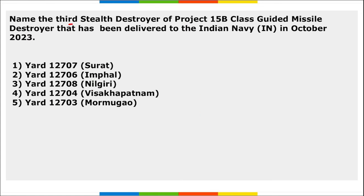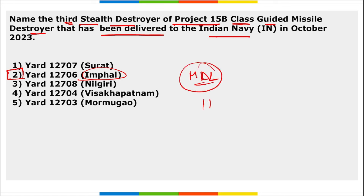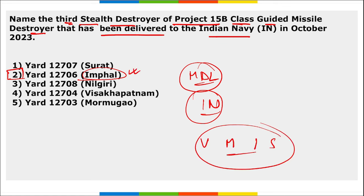Next: name the third stealth destroyer of Project 15B Class Guided Missile Destroyer delivered to Indian Navy in October. It is Yard 12706, named Imphal, developed by Mazagon Dock Shipbuilders Limited. It was designed by Indian Navy's Warship Design Bureau. The four ships of the project are named after major cities: Visakhapatnam, Mormugao, Imphal, and Surat. Imphal was recently delivered to the Indian Navy.